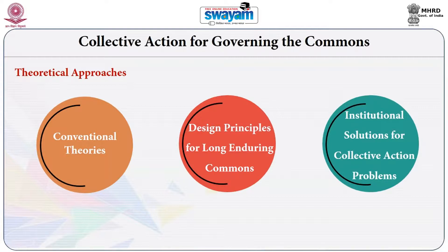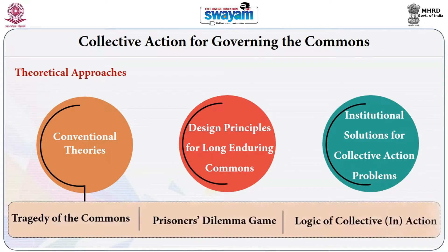Now I'll start with part one. In the conventional theories we'll be discussing three different ideas: one is the tragedy of the commons, second is the prisoner's dilemma game, and the third is the logic of collective action.